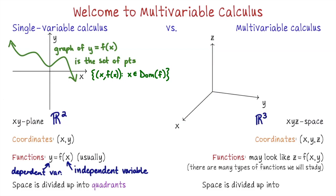Functions in R3 may look like z is a function of x and y, where x and y are independent variables and z depends on x and y. Notice here, z is a function of multiple variables — hence multivariable calculus. This type of function essentially generalizes the function from single variable calculus. But note that this is actually just one type of function that we're going to study this semester; there will be other kinds of functions in multivariable calculus which won't necessarily have exactly this form.